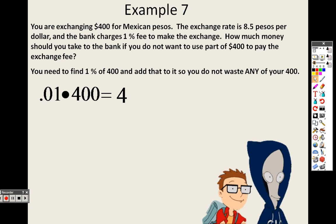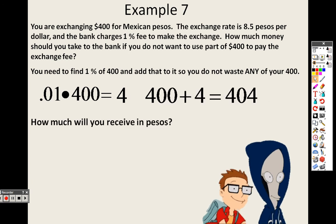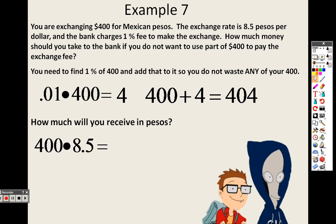So really I'm going to end up taking $404 to the bank. Now how much will you receive in pesos? So 400 times the rate 8.5. The reason why I know it's multiplication is because it says per. Pesos per dollar. Per meaning multiplication. So it's 400 times 8.5, which is 3,400 pesos.